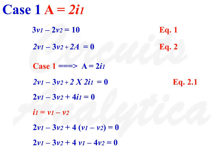We now have two equations: Equation 1: 3V1 minus 2V2 is equal to 10. Equation 2: 2V1 minus 3V2 plus 2A is equal to 0.